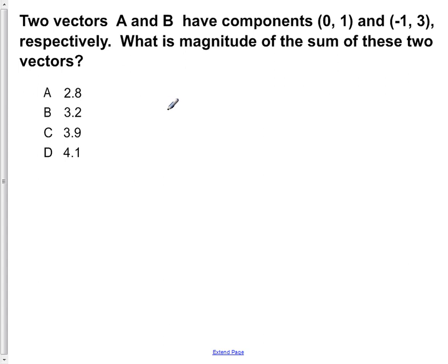Two vectors A and B have components (0, 1) and (-1, 3) respectively. What is the magnitude of the sum of these two vectors?